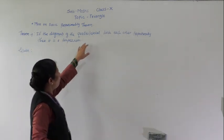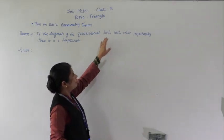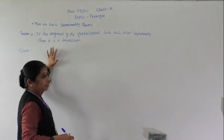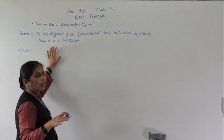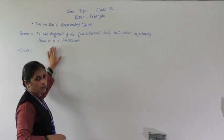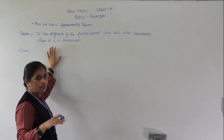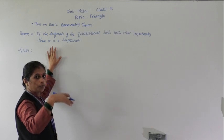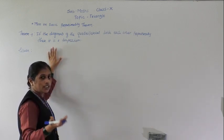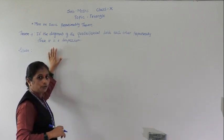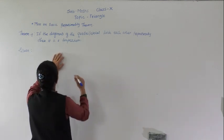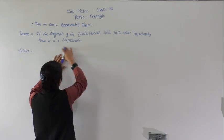If the diagonals of a quadrilateral divide each other proportionally, then it is a trapezium. Here, one quadrilateral is given and we have to prove that it is a trapezium. If it is a trapezium, we have to prove that one pair of opposite sides is parallel to each other. It is sufficient to show that one pair of opposite sides is parallel.